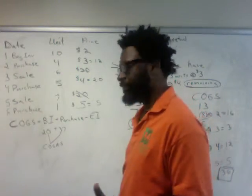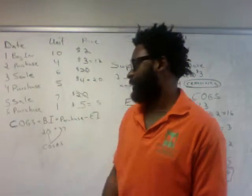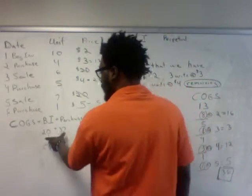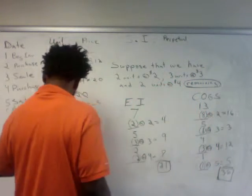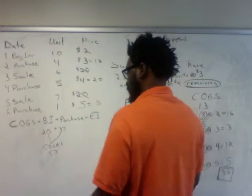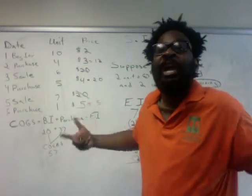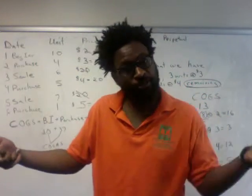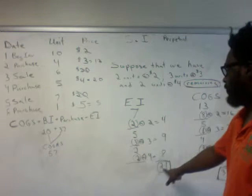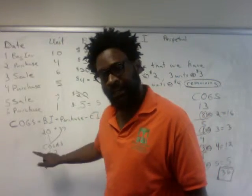You can check yourself because if you correctly calculated ending inventory, you'll automatically get the correct cost of goods sold. Our cost of goods available for sale summed to $57. Logically, what you sold plus what you didn't sell gives you the total cost of what you had to sell. So ending inventory plus cost of goods sold should always equal $57.